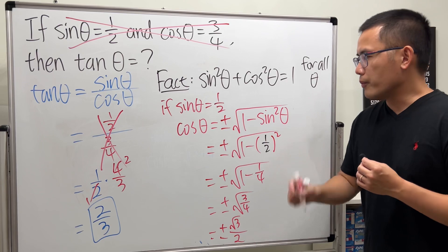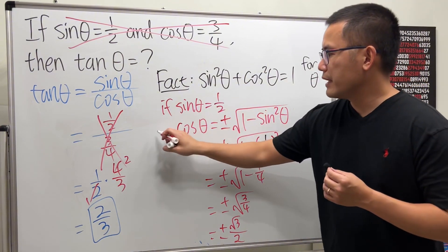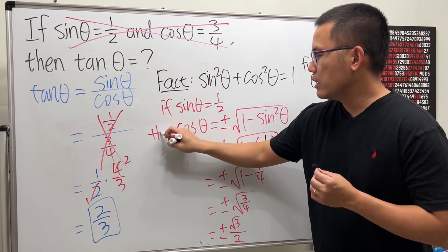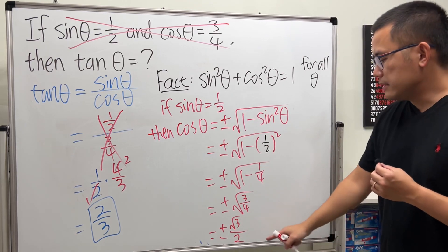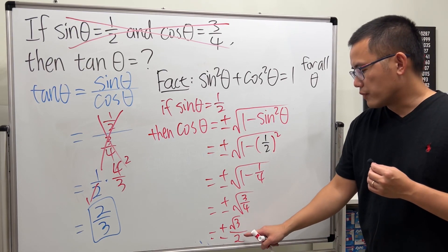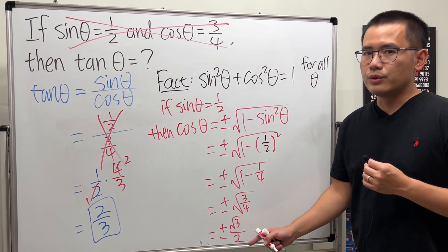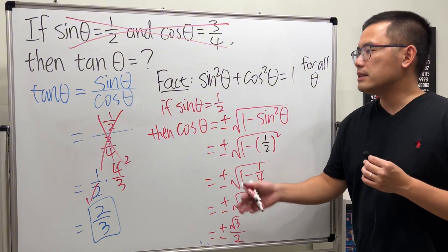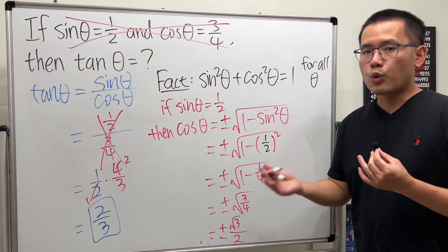So if sin θ is equal to 1/2, then cosine θ is either positive √3/2 or negative √3/2. It depends on the angle θ and in what quadrant it lies.